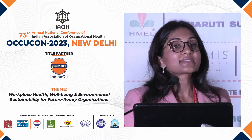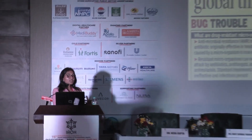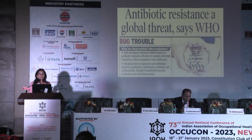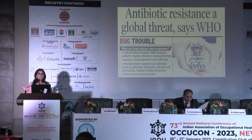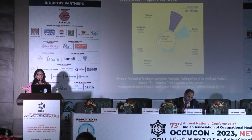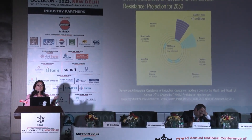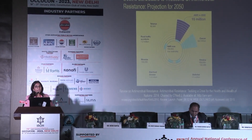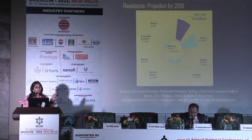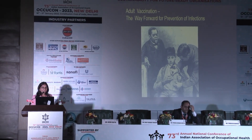Why do we need to focus on vaccinations? In this COVID-19 scenario, there are so many other infections on the rise. For treating infections we commonly use antibiotics, but antibiotics have been completely beaten by bacteria. We now face antibiotic resistance as a huge global threat. Deaths attributable to antimicrobial resistance are projected to reach 10 million by 2050 — more than cancer or road traffic accidents. Preventing infections through adult vaccination is the way forward.